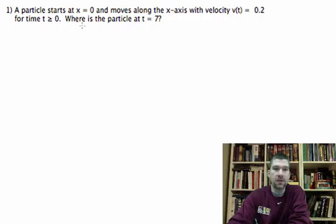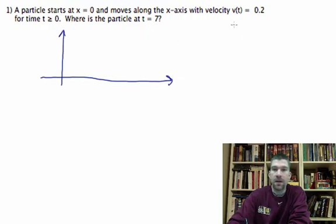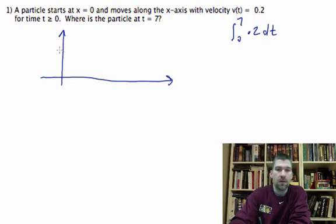If we've got a particle that starts at x equals 0, moves along the x-axis with velocity v of t equals 0.2 for some time larger than 0, where is the particle when t equals 7? We're actually talking about the integral from 0 to 7 of 0.2 dt. We want to use areas under curves because we haven't learned too many tricks yet for solving integrals.